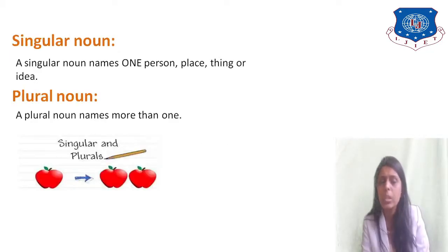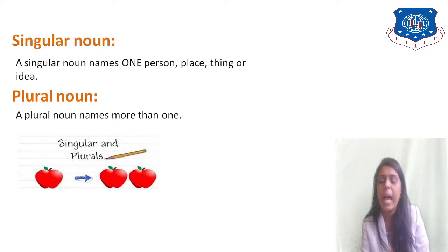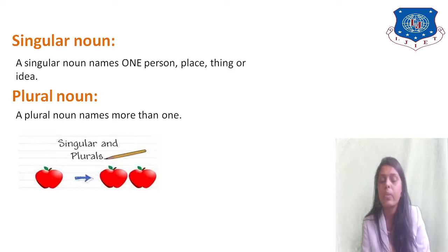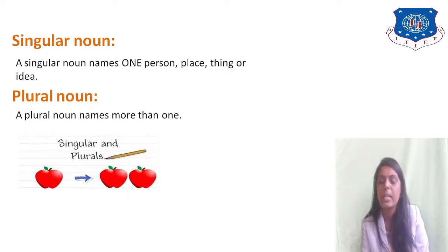A singular noun names one person, place, or thing. For example, if I am talking about one apple — 'I eat one apple every day' — that is a singular noun. A plural noun is when you are talking about more than one thing. For example, 'apples' is a plural noun, whereas 'apple' is a singular noun.